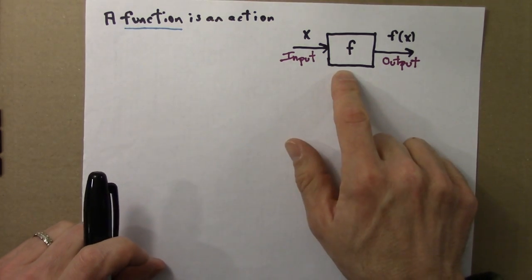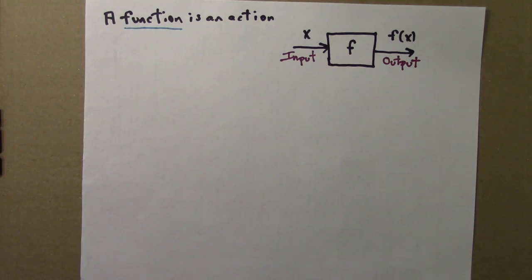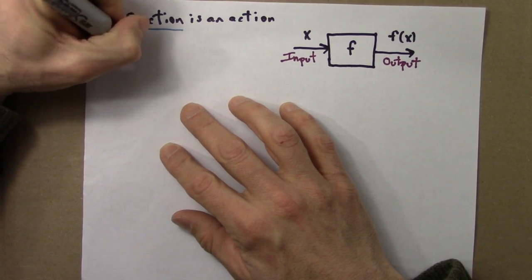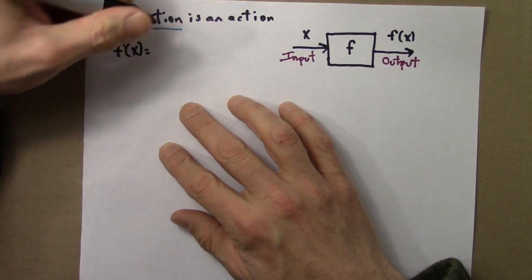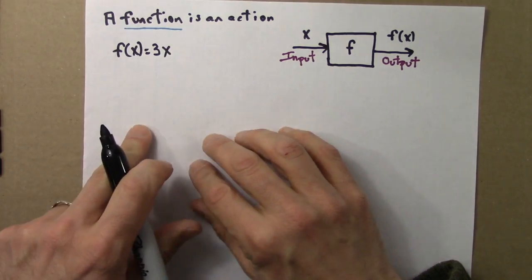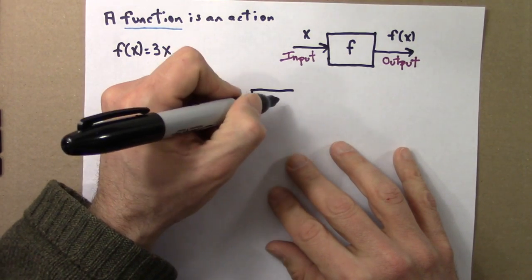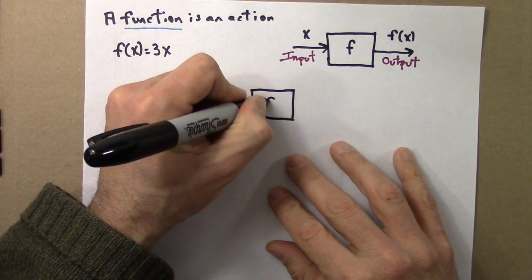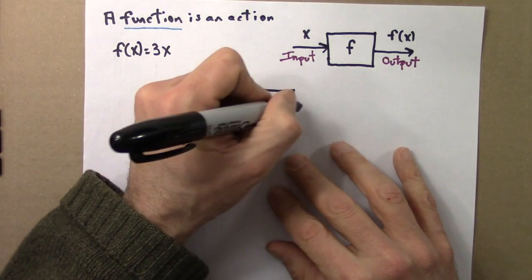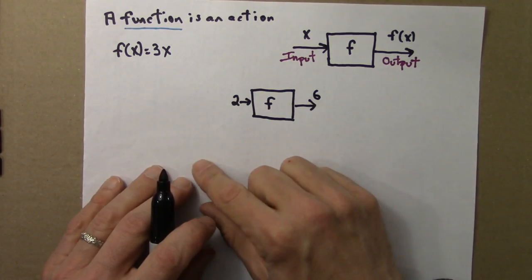As a concrete example, let's say f is a function that triples its input. We could write an equation for that. We could say f of x equals 3x. So f triples the input. So suppose that our input was 2. Then it would output 6, because 2 times 3 is 6.